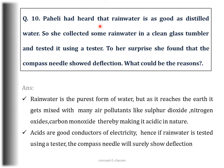Question number 10: Tahaili had heard that rain water is as good as distilled water. She collected some rain water and tested it using a tester, and to her surprise the compass needle showed deflection — what could be the reason? Rain water is the purest form of water, but as it reaches the earth it gets mixed with many air pollutants like sulphur dioxide, nitrogen oxide, and carbon monoxide, thereby making it acidic in nature. Since acids are good conductors of electricity, the compass needle will surely show deflection when rain water is tested.